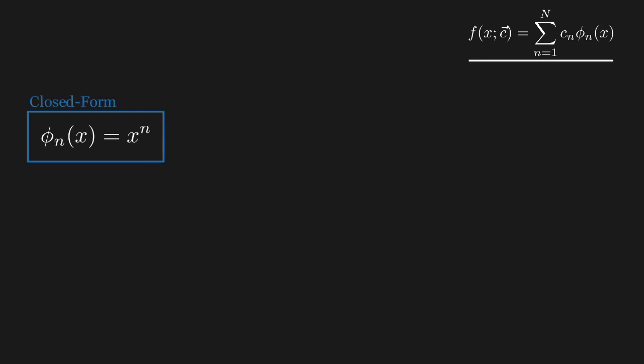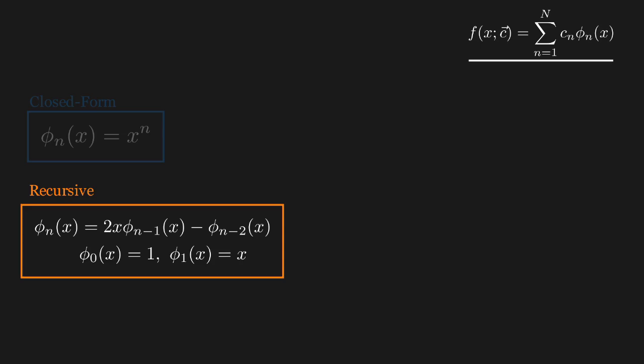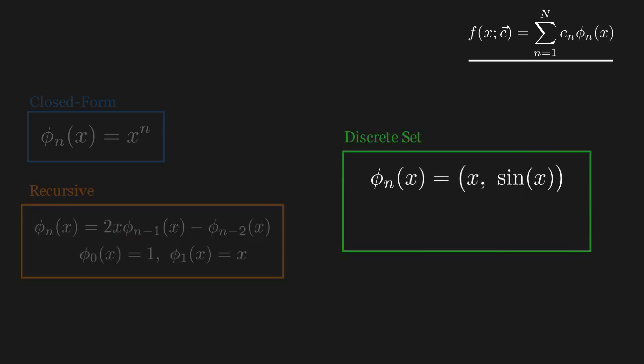Basis functions can be closed form, as in the polynomial example, recursive, like the Chebyshev relationship, or you could just have a discrete set of functions that you wish to combine. In the displayed example, the fitting function would just be c0 times x plus c1 times sin x.